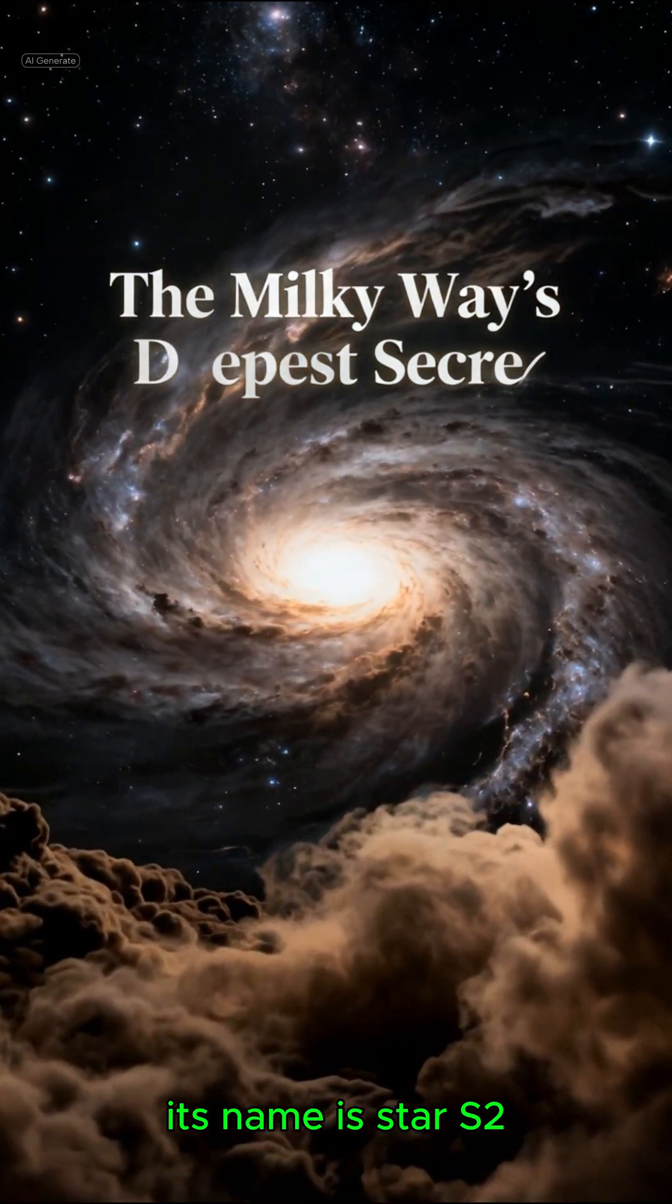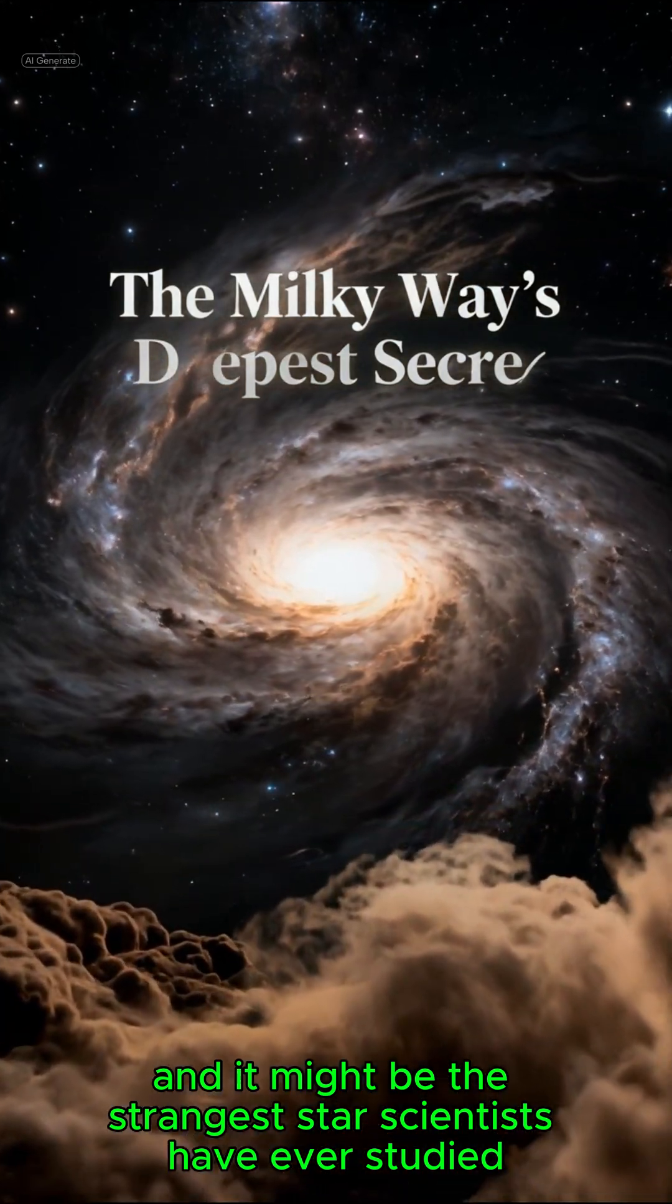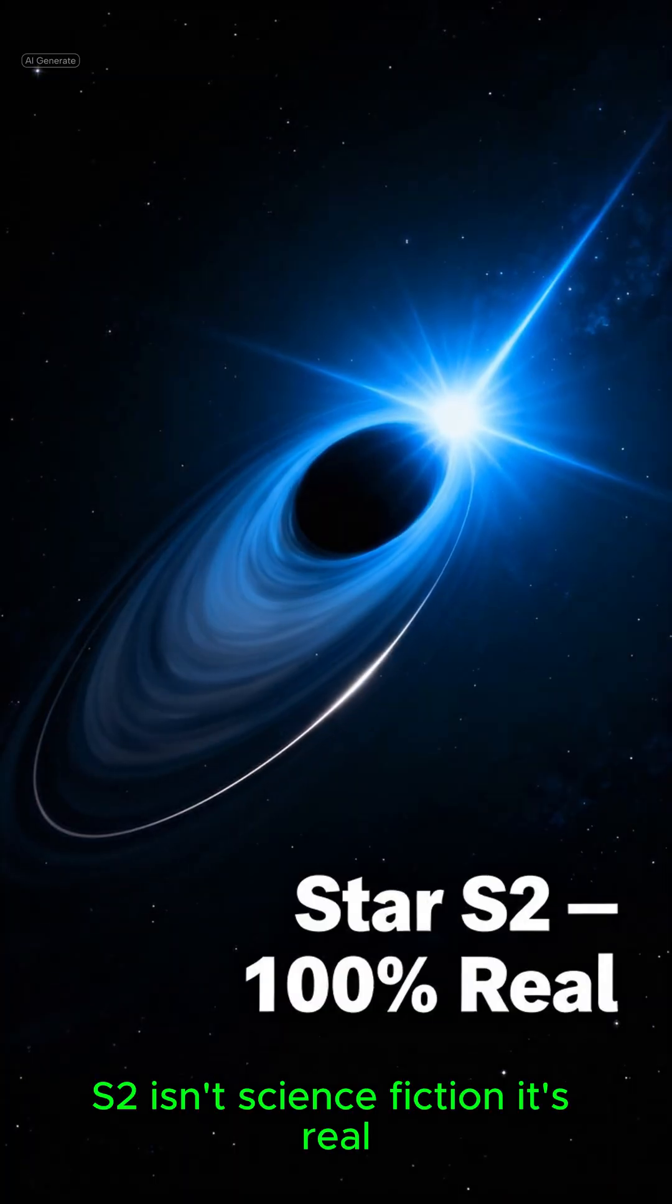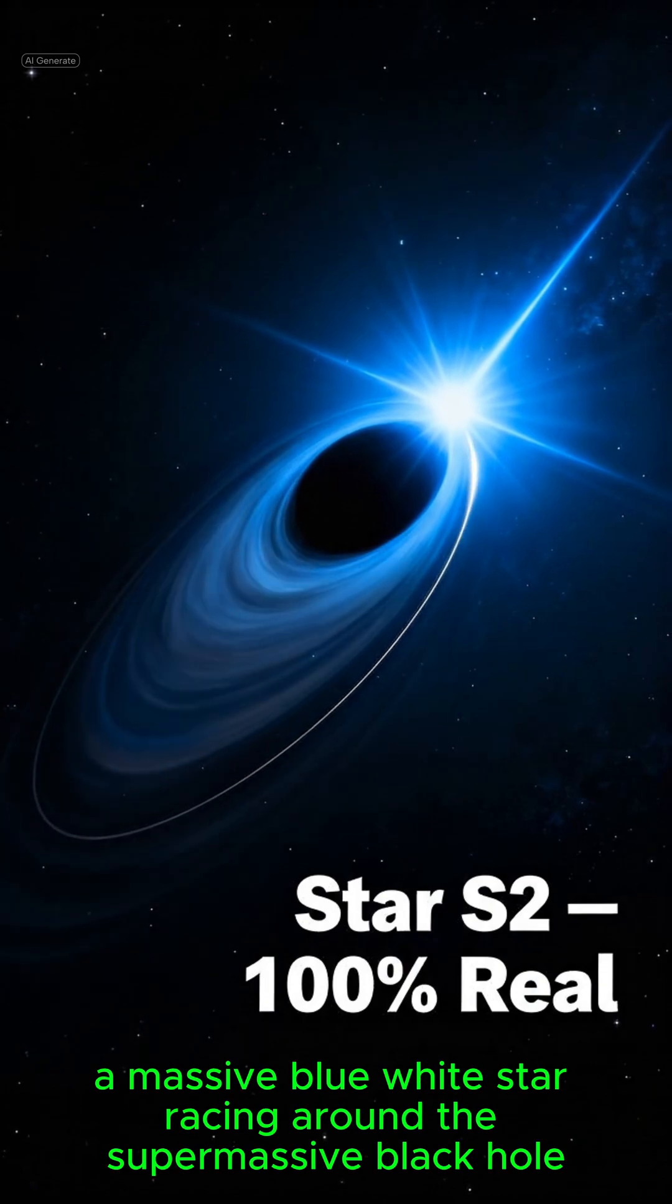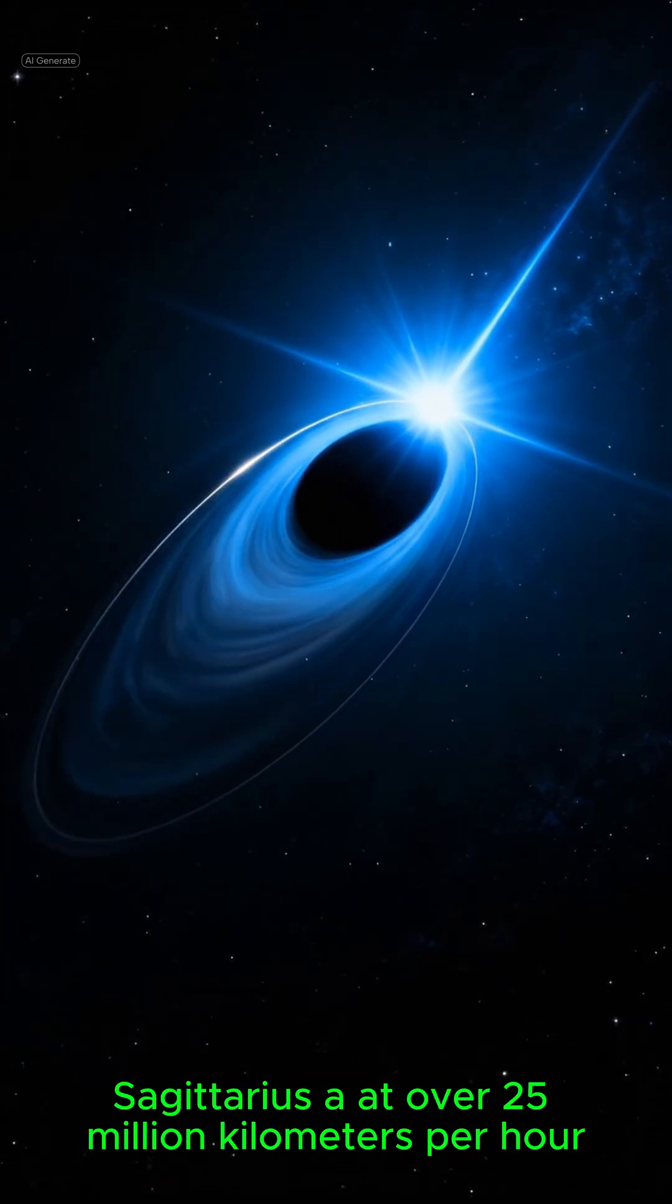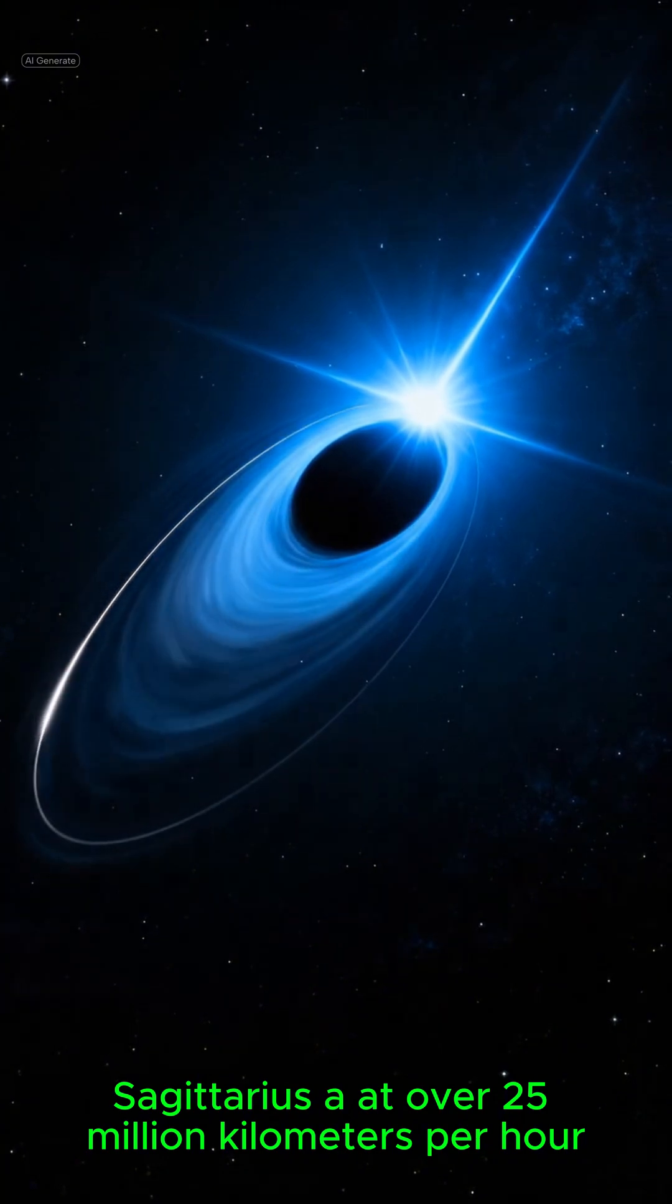Its name is star S2, and it might be the strangest star scientists have ever studied. S2 isn't science fiction. It's real. A massive blue-white star racing around the supermassive black hole Sagittarius A at over 25 million kilometers per hour.